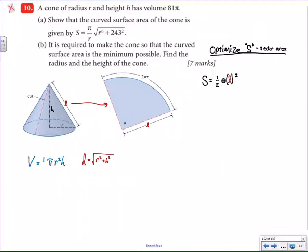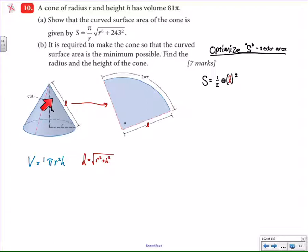Hello, today we're going to look at an optimization calculus problem, IV style. It's a little bit more complicated than the typical optimization problems, and you'll see why in just a moment. I need to know that I'm working with the relationship between a cone and the surface area of the curved portion of the cone, which forms this particular sector.